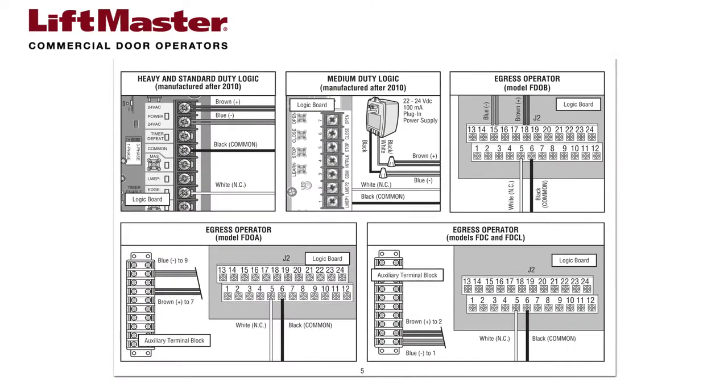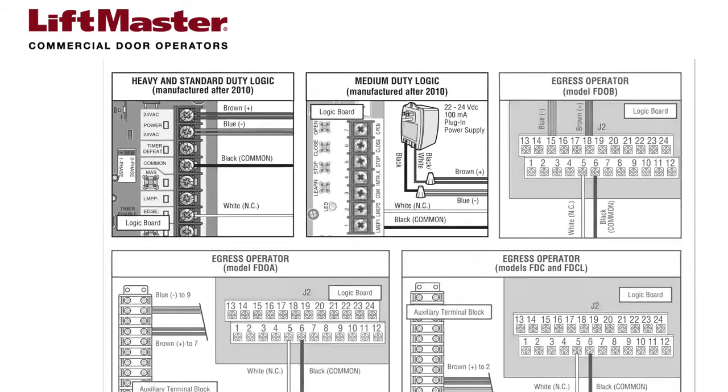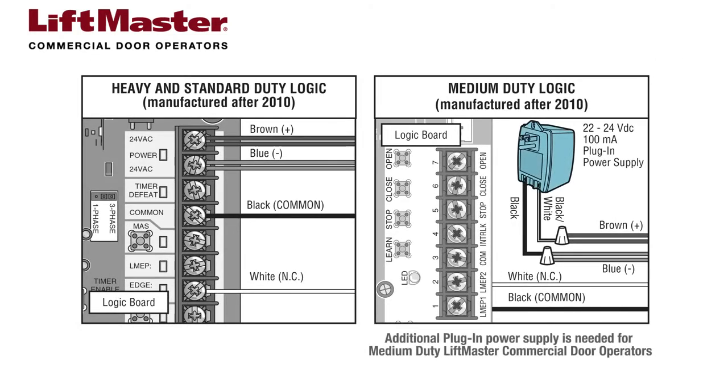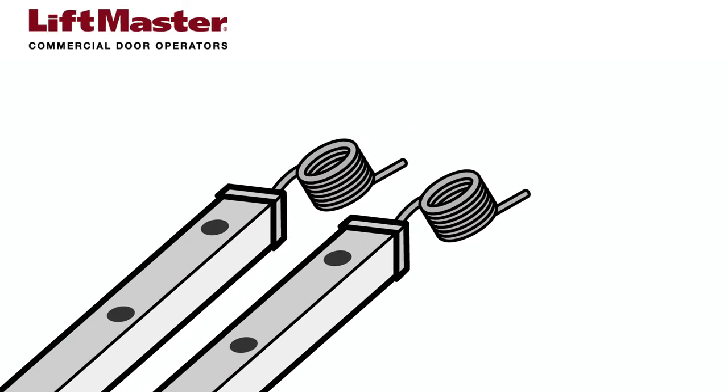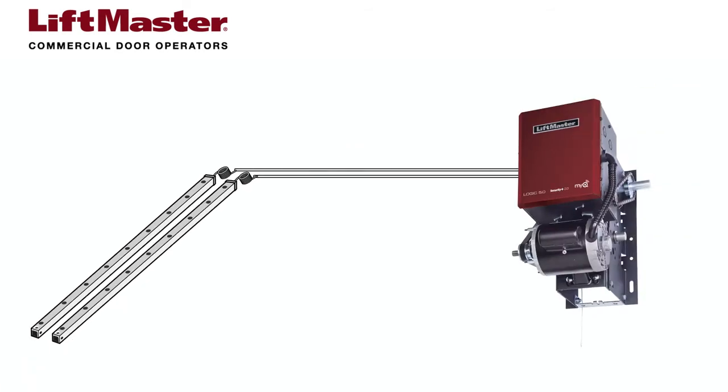Next, we will demonstrate wiring to a standard duty Logic 5 operator. Follow the instructions in the light curtain installation manual for your specific operator type and application. The light curtain comes with 6 feet of wire. You will need to provide the wire that extends from each of the light curtains up to the Logic 5 operator. Do not run this wiring in the same conduit with AC power.